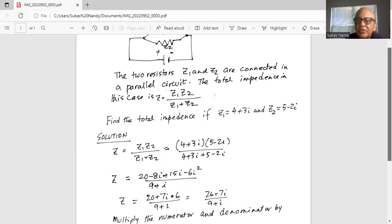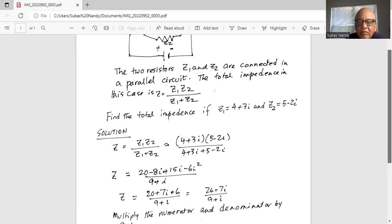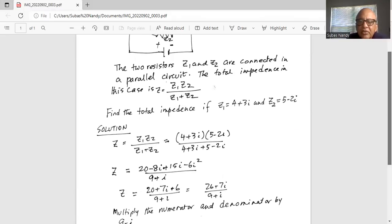FOIL means first term first. So 4 times 5 is 20. Then outside, which is 4 times minus 2i is minus 8i. Then inside, which is 3i times 5, which is plus 15i. And then the last terms, which is plus 3i times minus 2i. So it is minus 6i squared divided by, in the denominator, we have 4 plus 5 is 9 and 3i minus 2i is just i.